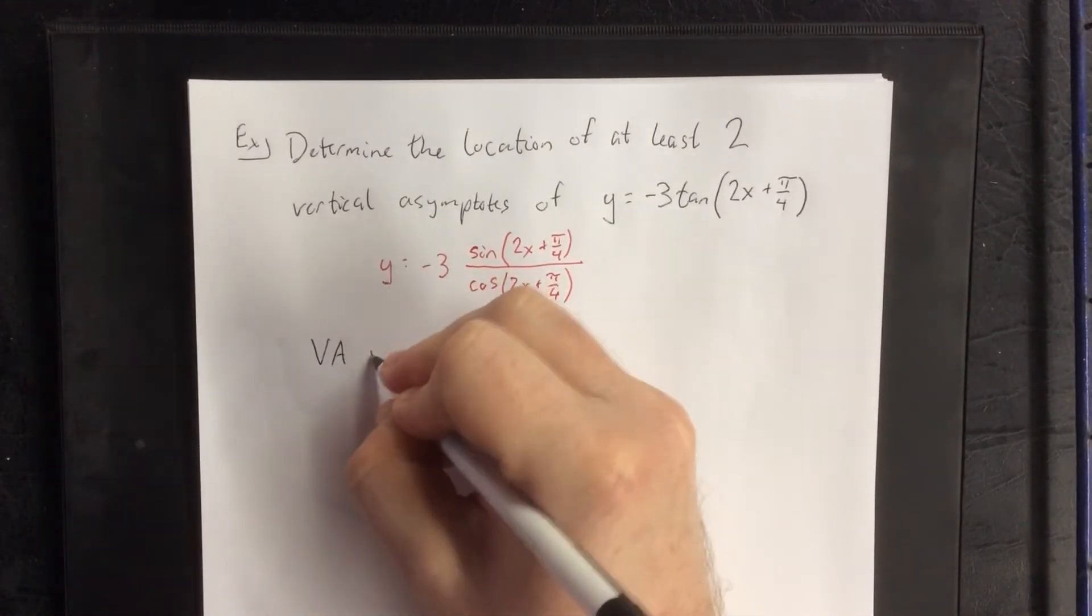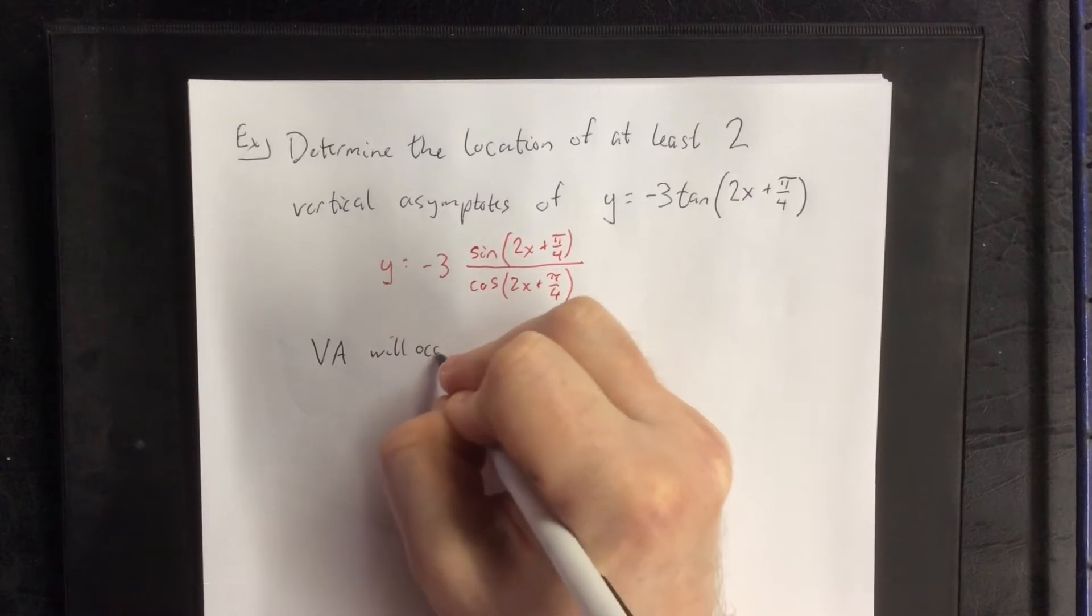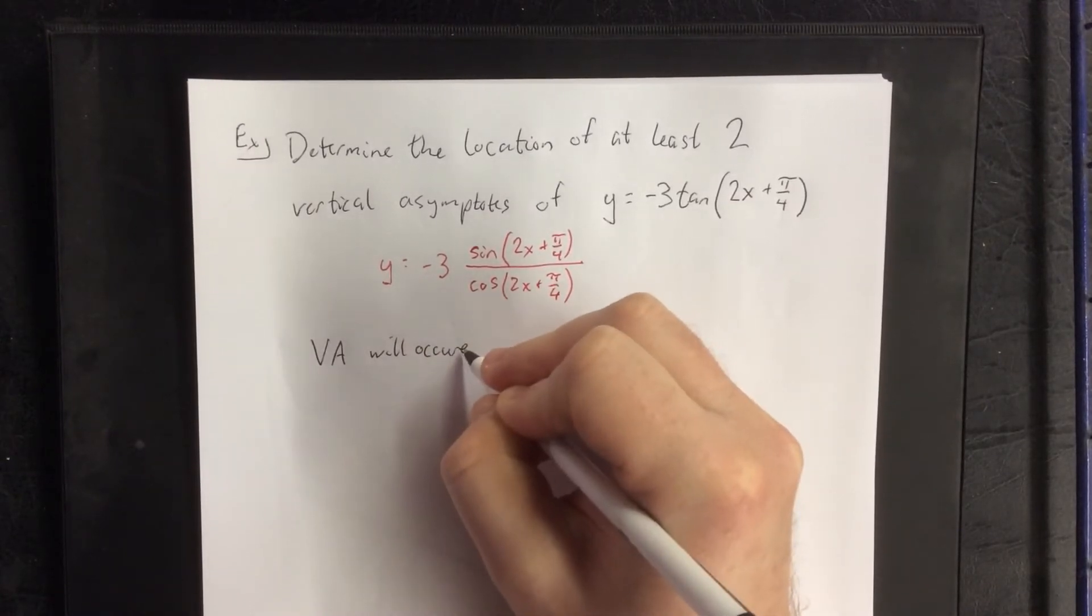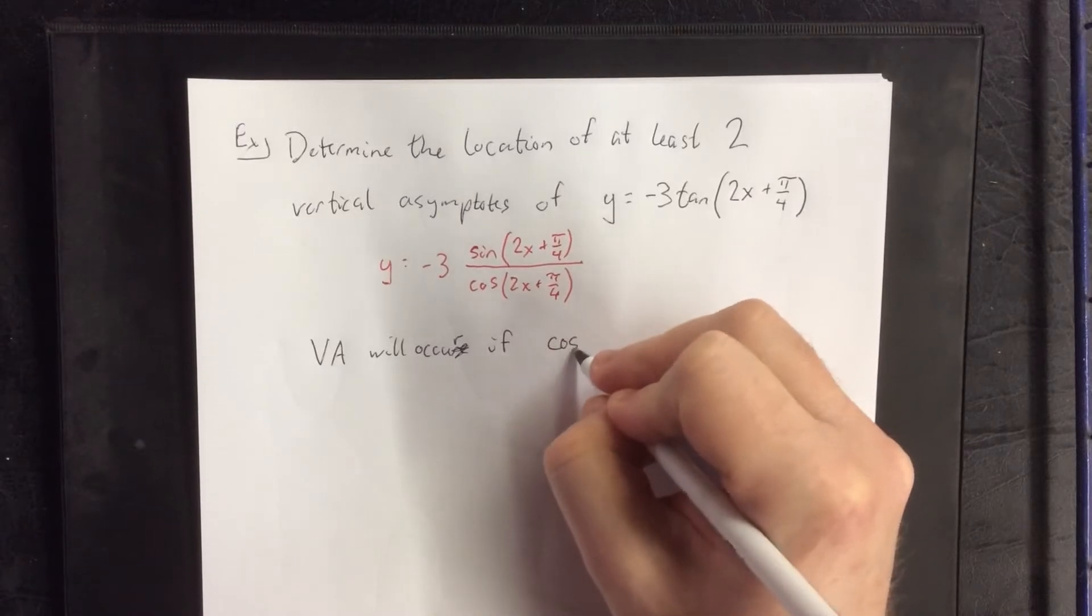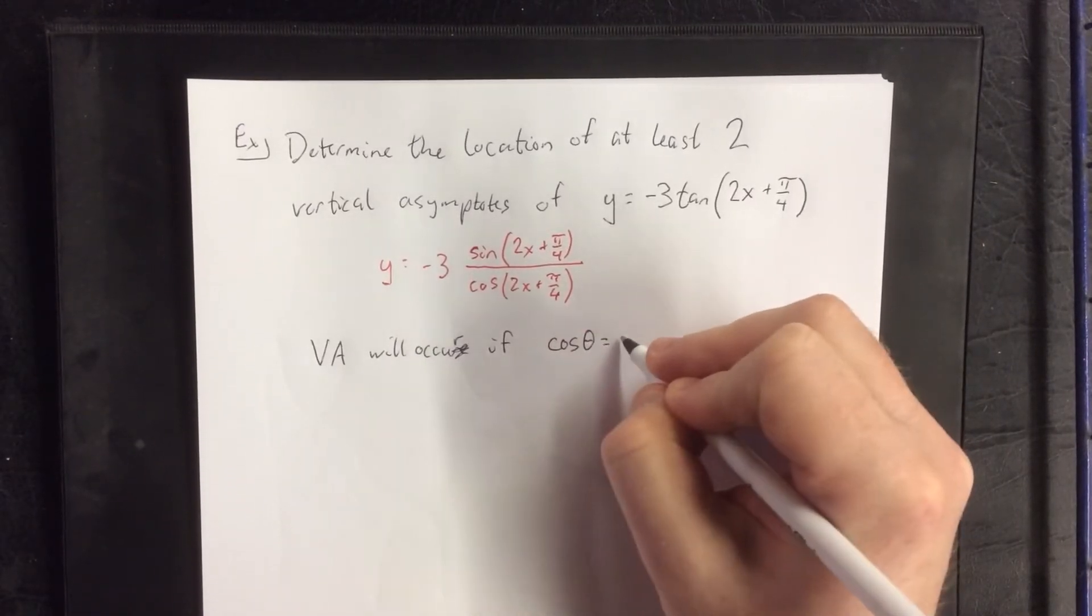Vertical asymptote will occur if cosine of theta is equal to zero.